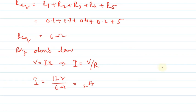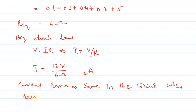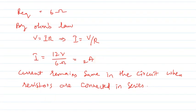The question asks what is the current in the 0.3 ohm resistor. So we conclude that current remains the same in the circuit when resistors are connected in series.